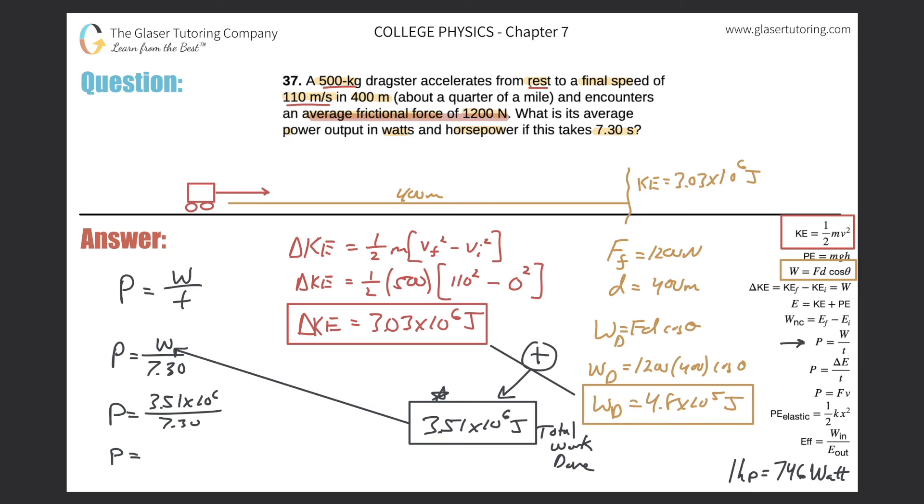Therefore now we'd have, just take that and divide it by 7.3. And we get a power value of 4.81 times 10 raised to the five watts. So that is the power in watts. That takes care of that part.